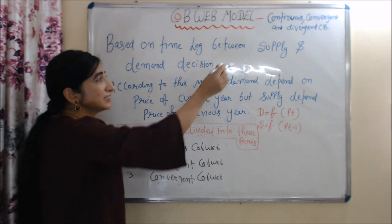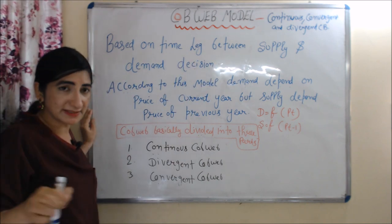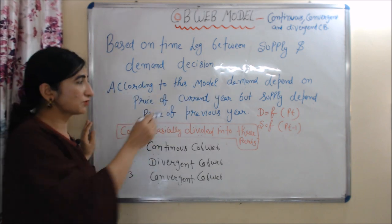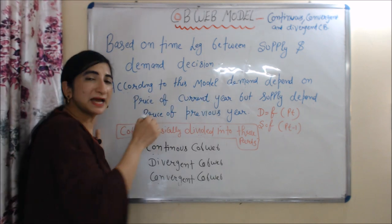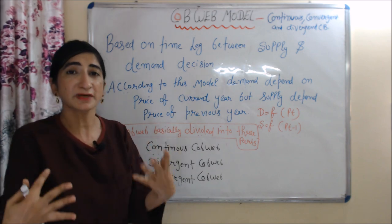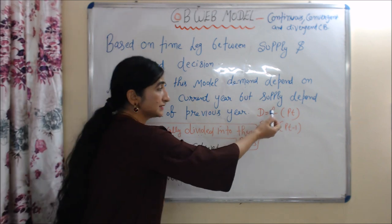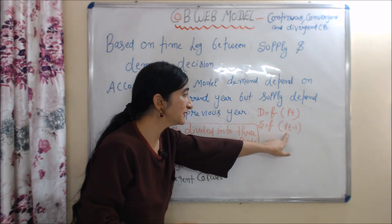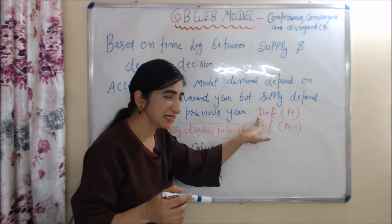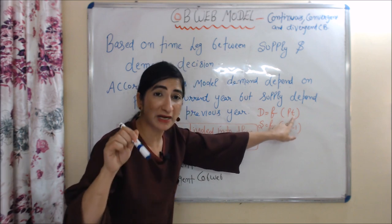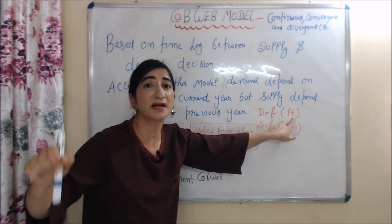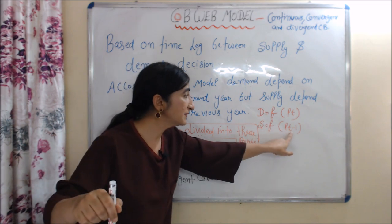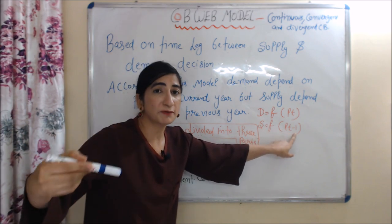The Cobweb Model is based on time lag between supply and demand decision. According to this model, demand depends on the price of the current year, but supply depends on the price of the previous year. We can represent it as: D is a function of Pt, and S is a function of Pt minus one, where D is demand and Pt is the price of the current year, and S is supply and Pt minus one is the price of the previous year.